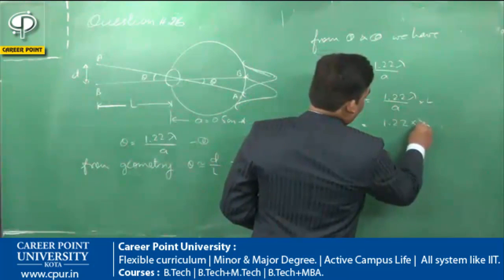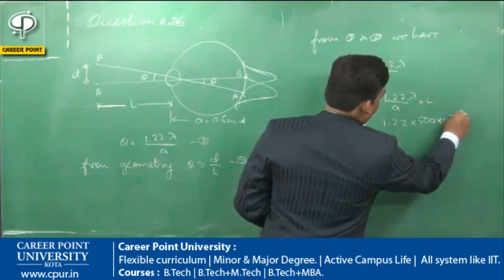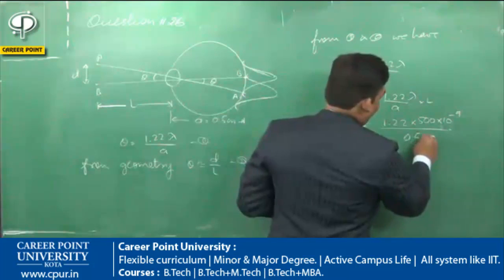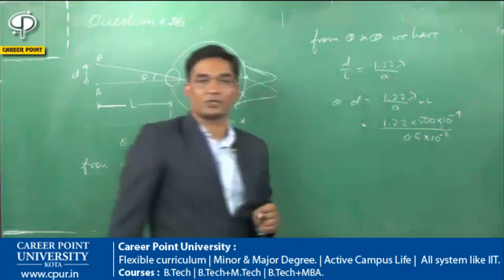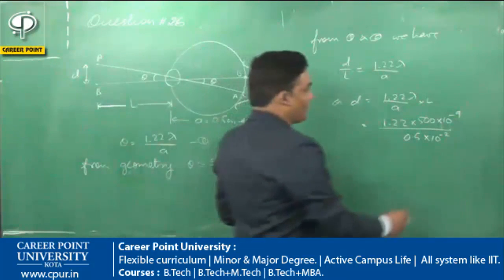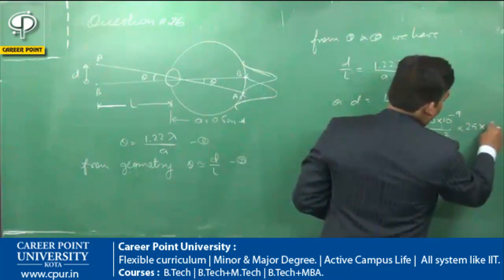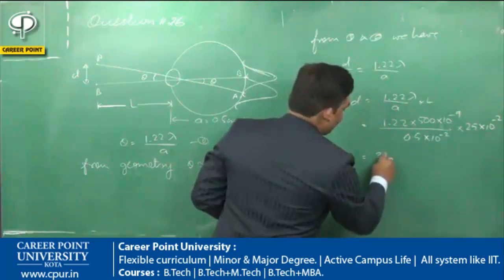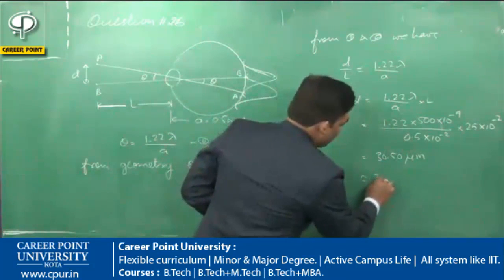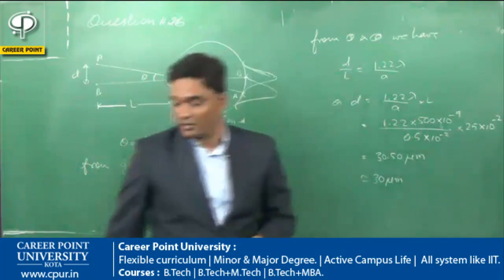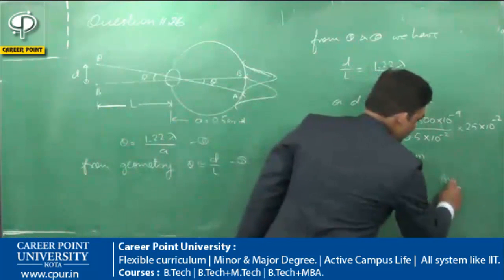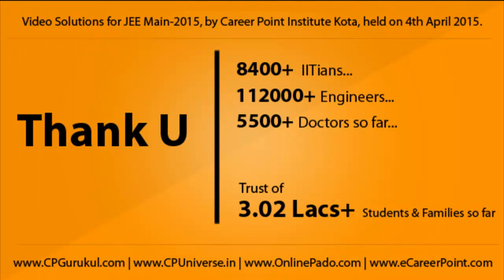In this problem, the data provided is: wavelength of light is 500 nanometers (500 × 10⁻⁹ m), diameter of the pupil is 0.5 cm (0.5 × 10⁻² m), and the distance of the object from the eye lens is 25 cm (25 × 10⁻² m). After solving, we get approximately 30.50 micrometers, and the closest answer is 30 micrometers. Checking the options, the right answer is option number 2.